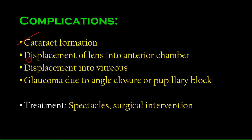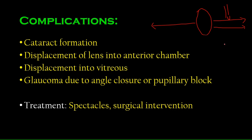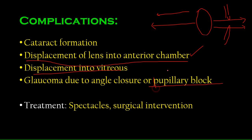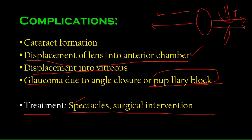Complications of ectopia lentis include formation of cataracts. The lens can displace forward into the anterior chamber, backward into the vitreous humor, or get stuck at the iris causing a pupillary block. A pupillary block impairs fluid circulation between the two chambers and can cause glaucoma. Treatment includes spectacles or glasses, and surgery to put the lens back in its proper place.